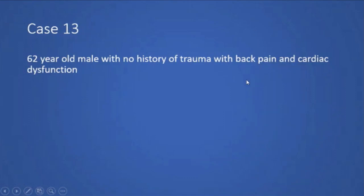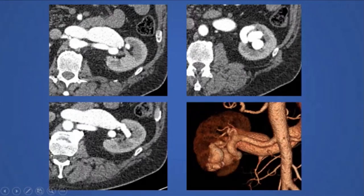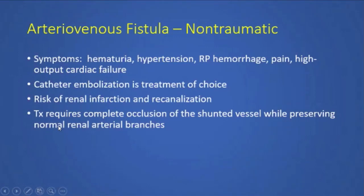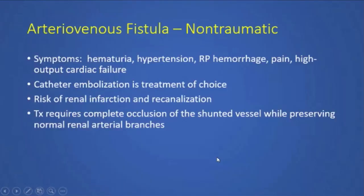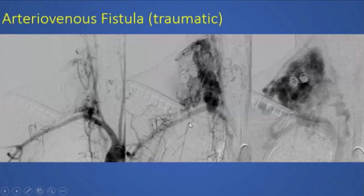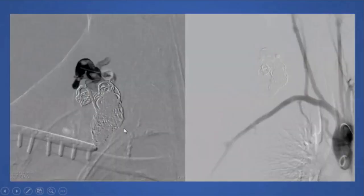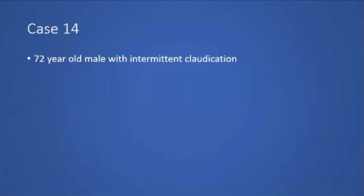The next patient is a 62-year-old male with no trauma history presenting with back pain and cardiac dysfunction. CT angiogram shows the renal artery and renal vein perfusing simultaneously — a very large non-traumatic arteriovenous fistula. We found the nidus and embolized it, with risks including recanalization and renal parenchymal infarction. A companion case shows an 18-year-old with a traumatic AV fistula from the subclavian to venous branches, also coil embolized. AV fistulas can be traumatic or non-traumatic.